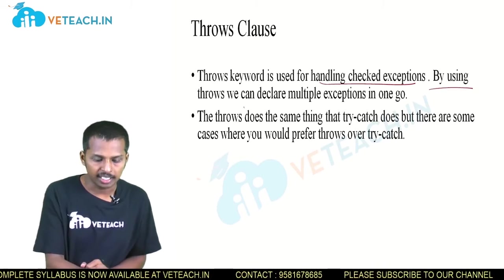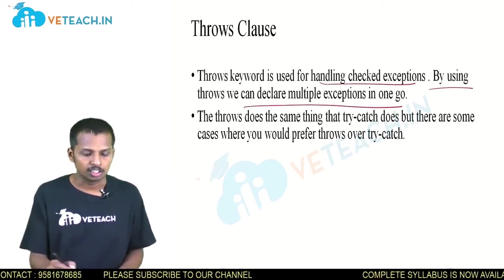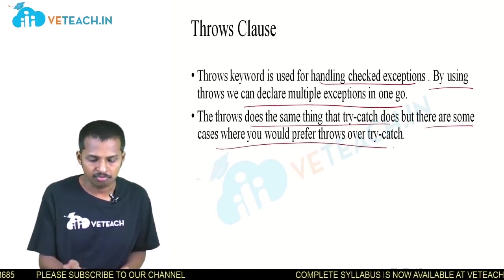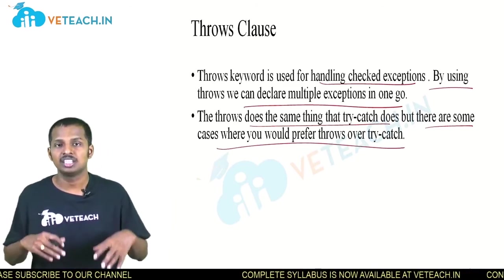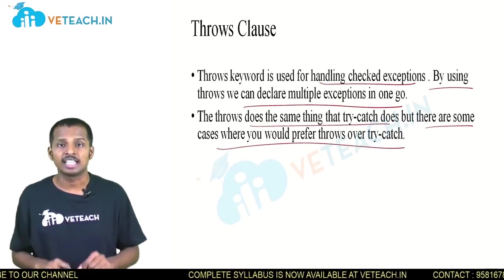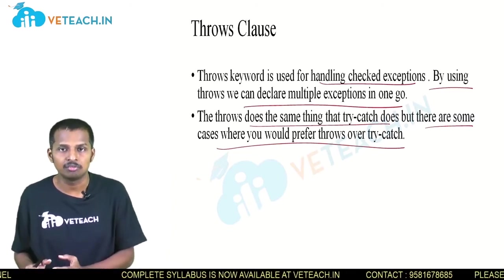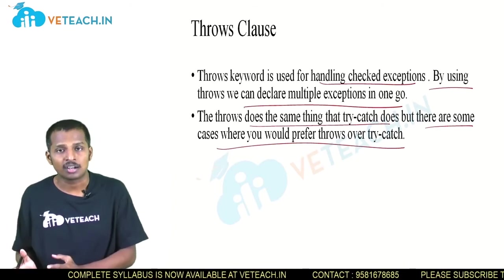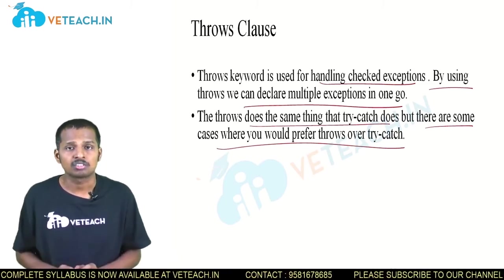By using throws, we can declare multiple exceptions in one statement. The throws keyword does the same thing as a try-catch block does. There are some cases where you need to prefer throws over try-catch. Without using a try-catch block, we can list all the exception names beside the throws keyword, and whatever try-catch would do will be done by the throws keyword itself. That's the purpose of the throws keyword.